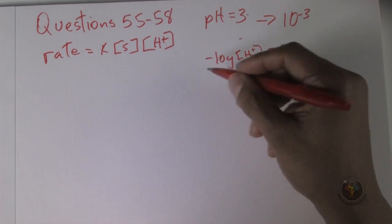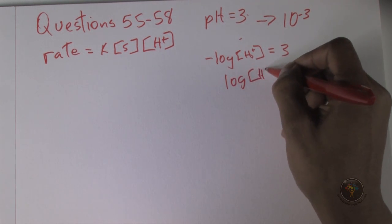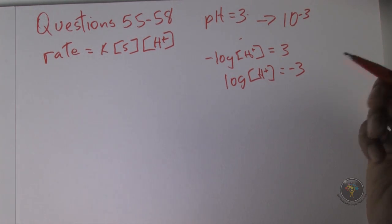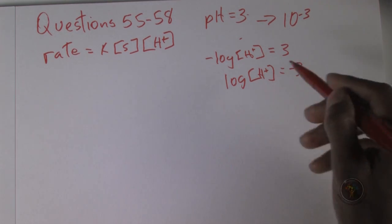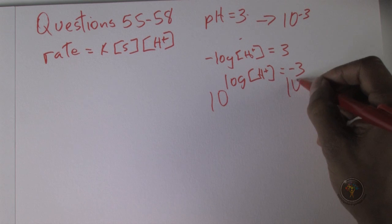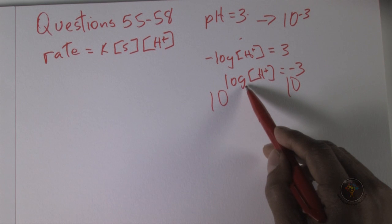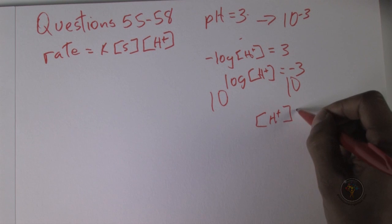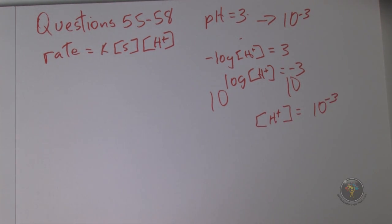That means we take the negative of both sides, so log hydrogen ion concentration equals negative 3. The rule of logarithms is that you can raise both sides to the power of 10. So 10 to the log 10 is just whatever is there, so H+ equals 10 to the minus 3.